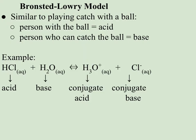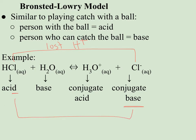The textbook likes to describe it as playing catch: if you have the ball (H+), you're the acid; if you're waiting to catch it, you're the base. For example, HCl (aqueous) in water — HCl loses its H+, so HCl is the acid and it becomes the conjugate base. Water accepts that H+ to become H3O+, so water is the base and H3O+ is the conjugate acid.